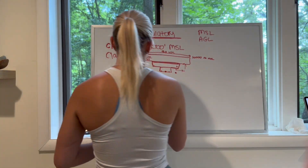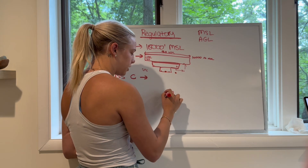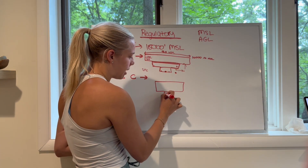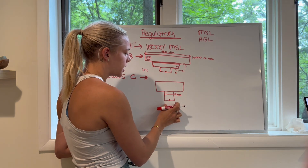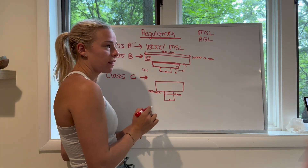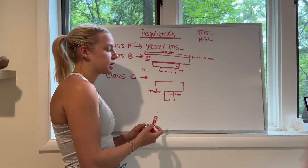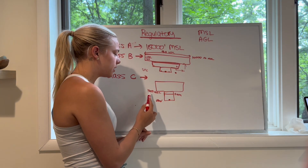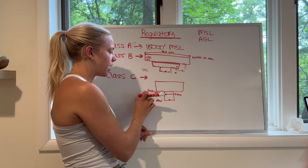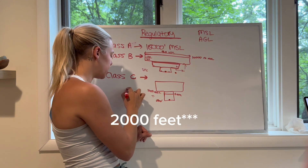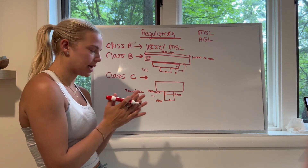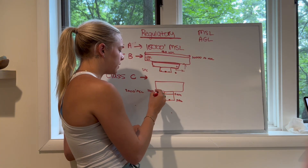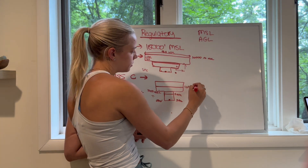Class Charlie is a little simpler than Bravo. It also has layers, but generally only two. The bottom part is about five nautical miles wide and generally goes up to 1,200 feet AGL. You need to do math to find the MSL altitude — if the airport sits at 800 feet elevation, you add 1,200 to get 2,000 feet MSL where that inner ring starts. The outer ring is normally 10 nautical miles wide and extends from the surface up to that 1,200 feet AGL level.